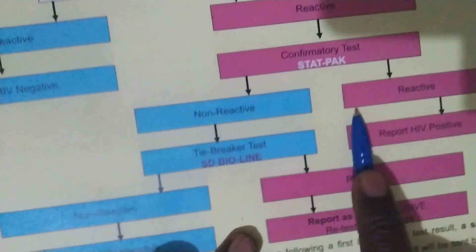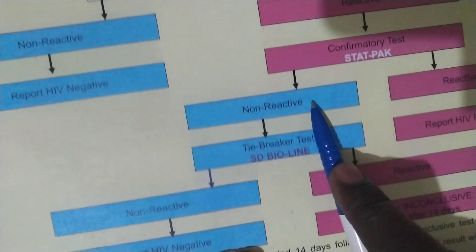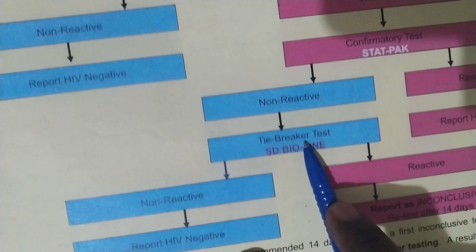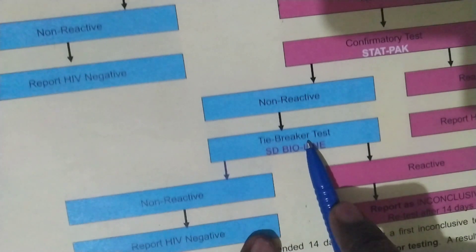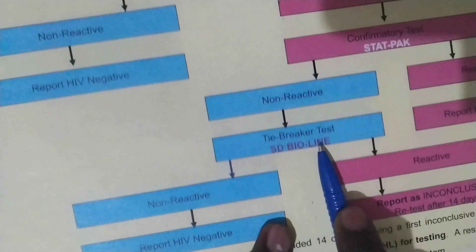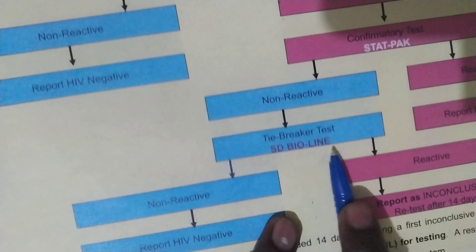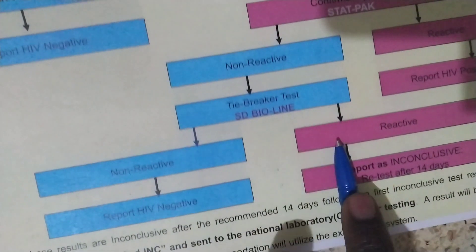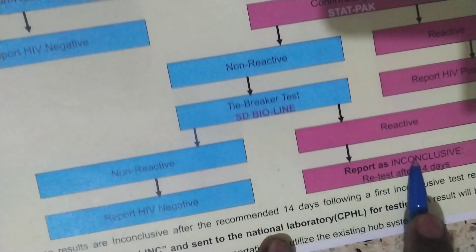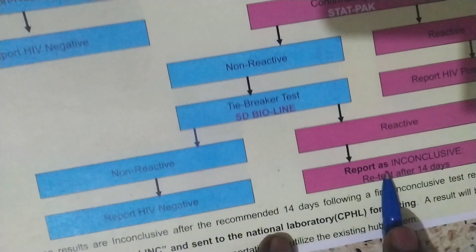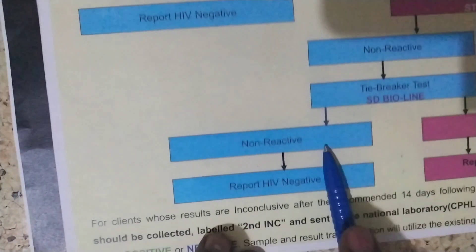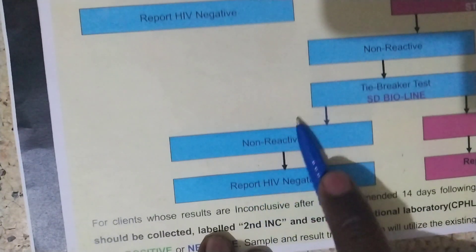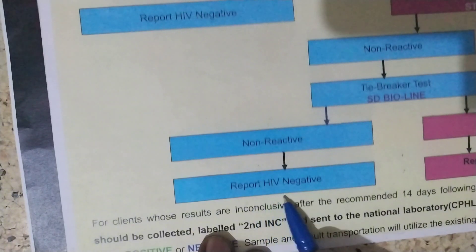If STATPAC reports negative — that is one line — we do the tiebreaker test. The tiebreaker test we use is SD Bioline. If SD Bioline is reactive, that is two lines, we report inconclusive and the person will be retested after 14 days. If SD Bioline reports negative, that is non-reactive, we report the person as HIV negative.